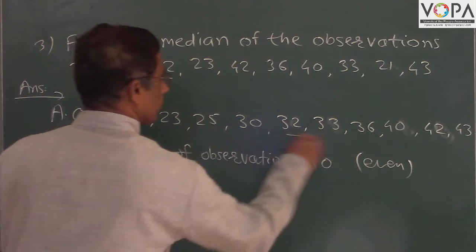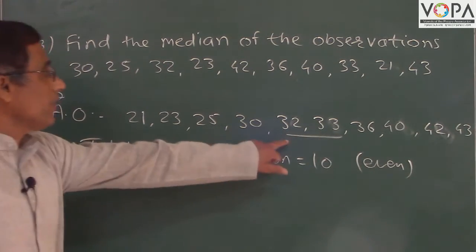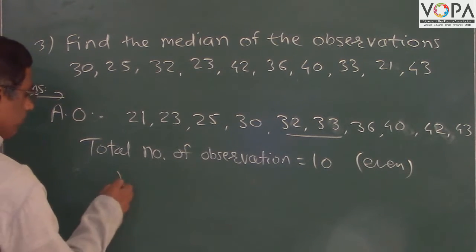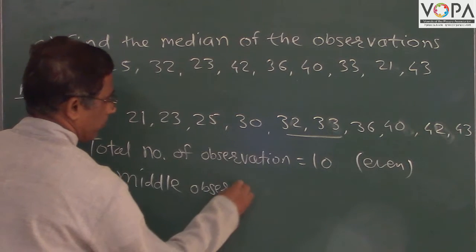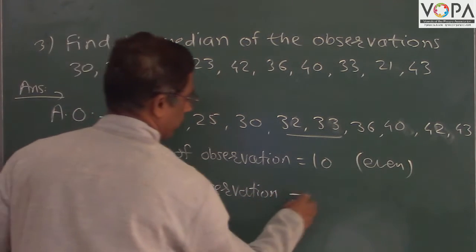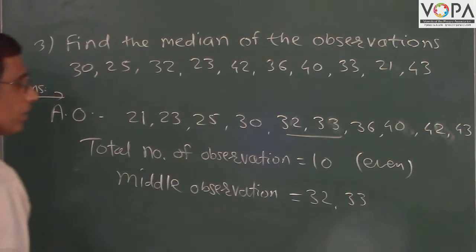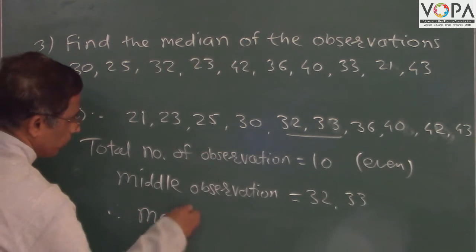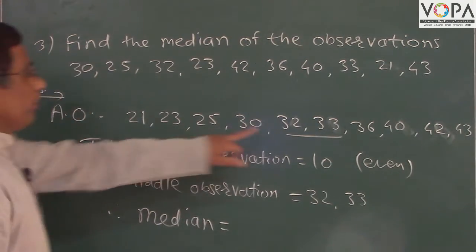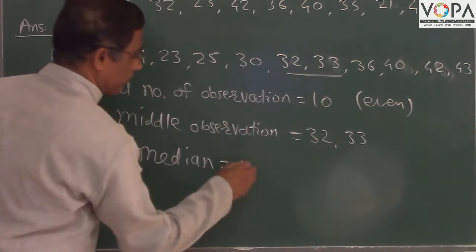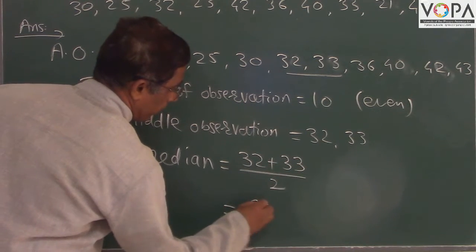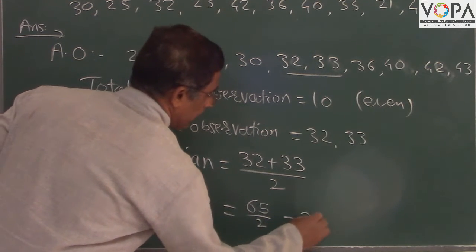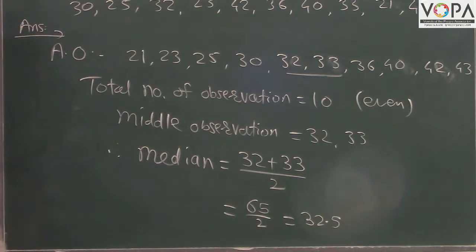So middle observations are 32 and 33. Therefore median is equal to the fifth and sixth observation. Sum of the fifth and sixth observation means 32 plus 33 upon 2, which equals 65 upon 2, equals 32.5. This is the median of the given observation.